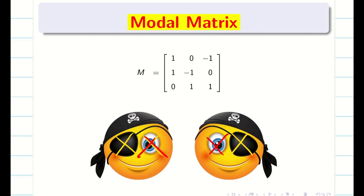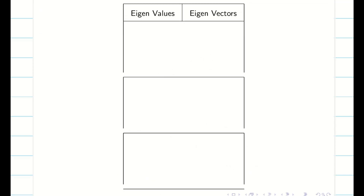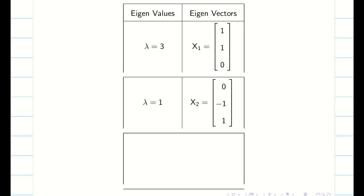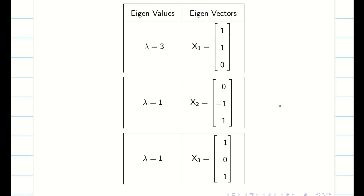Write the eigenvalues and their corresponding eigenvectors in a neat form. We have learned how to find eigenvectors when eigenvalues are repeated for a non-symmetric matrix. If the eigenvalues are distinct, the procedure is the same as for a symmetric matrix. Thanks for watching. If you have any queries or doubts, post in the comment box — we are there to help you. Thank you, see you in the next video.